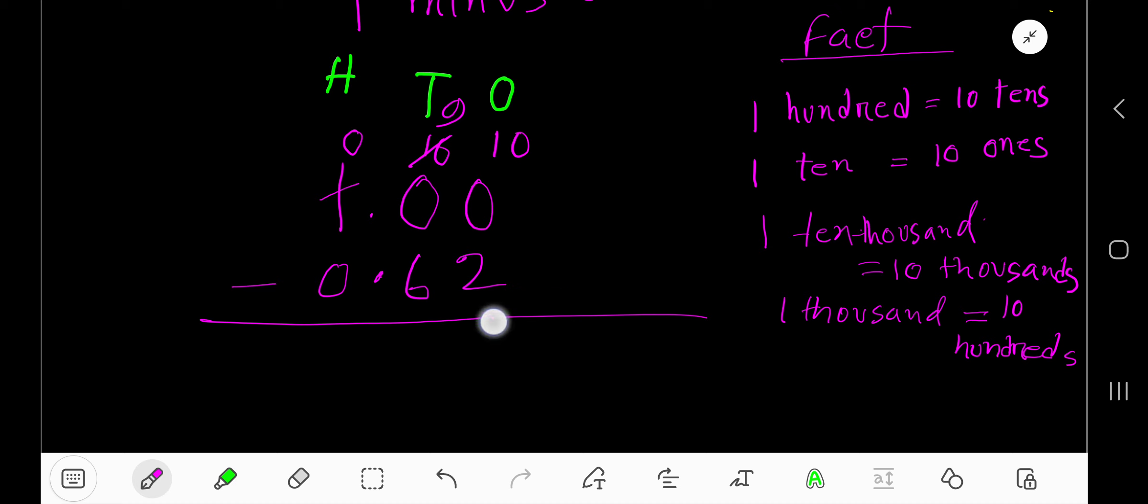2 from 10, so you have 8. Take away 6 from 9, you will have 3. Just line up, place the decimal, and then you have 0. The answer is 0.38.